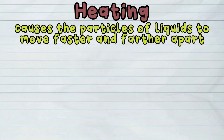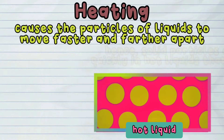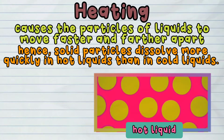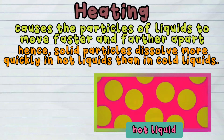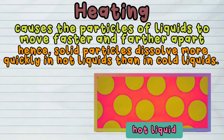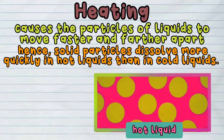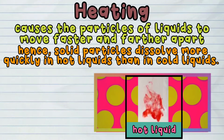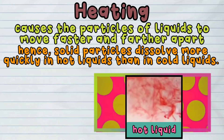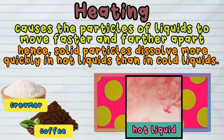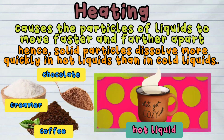Heating causes the particles of liquids to move faster and farther apart. Hence, solid particles dissolve more quickly in hot liquids than in cold liquids. When heated, the particles of a liquid solvent move and come in contact with the solid particles faster, causing the solid solutes to dissolve. For example, coffee, creamer, or powdered chocolate dissolve faster in hot water than in cold water.